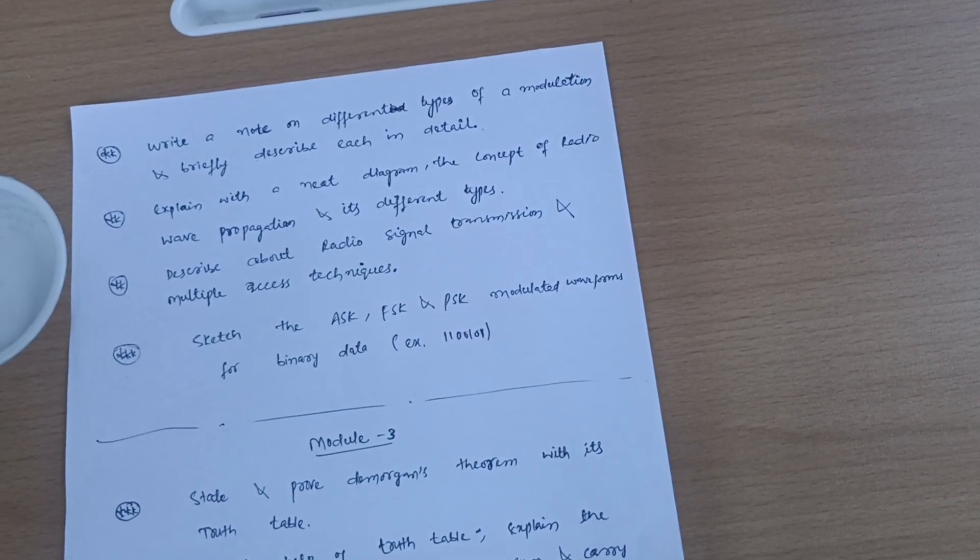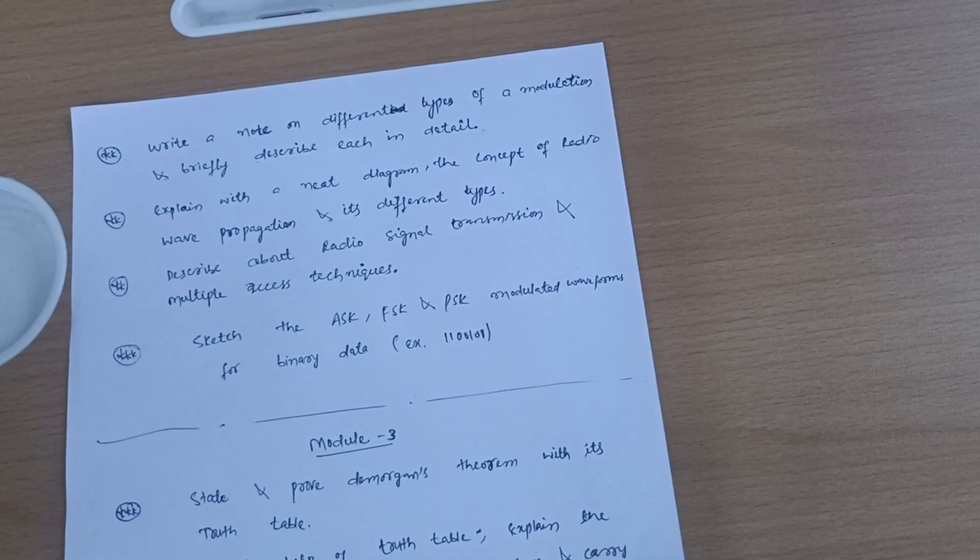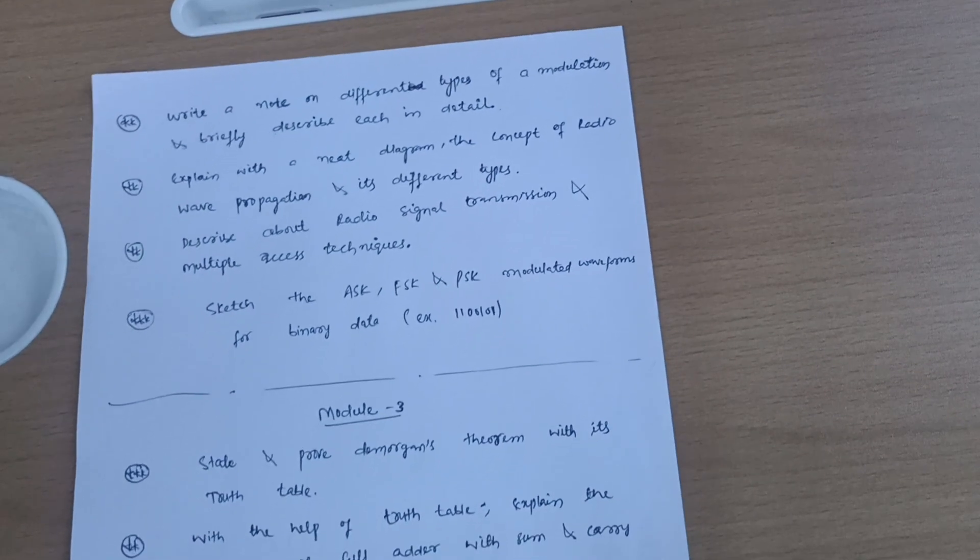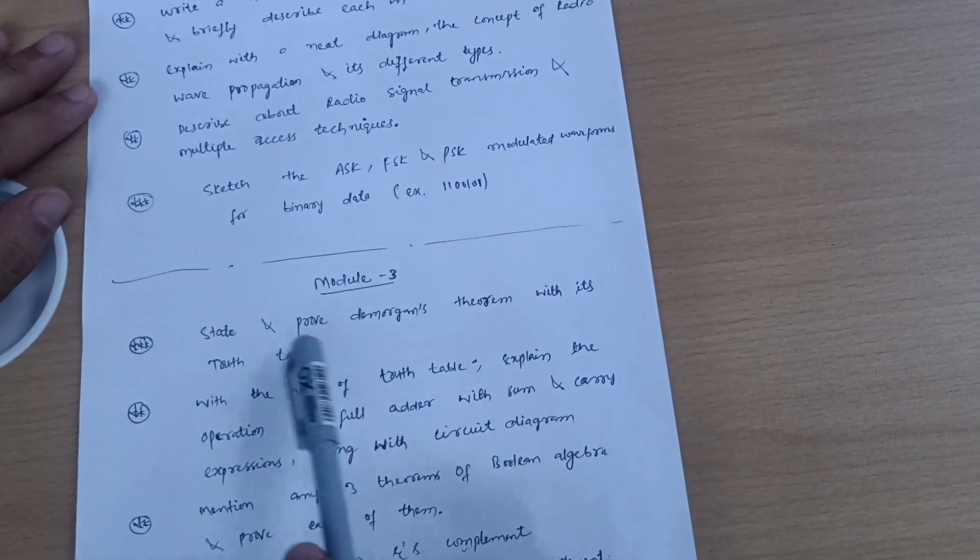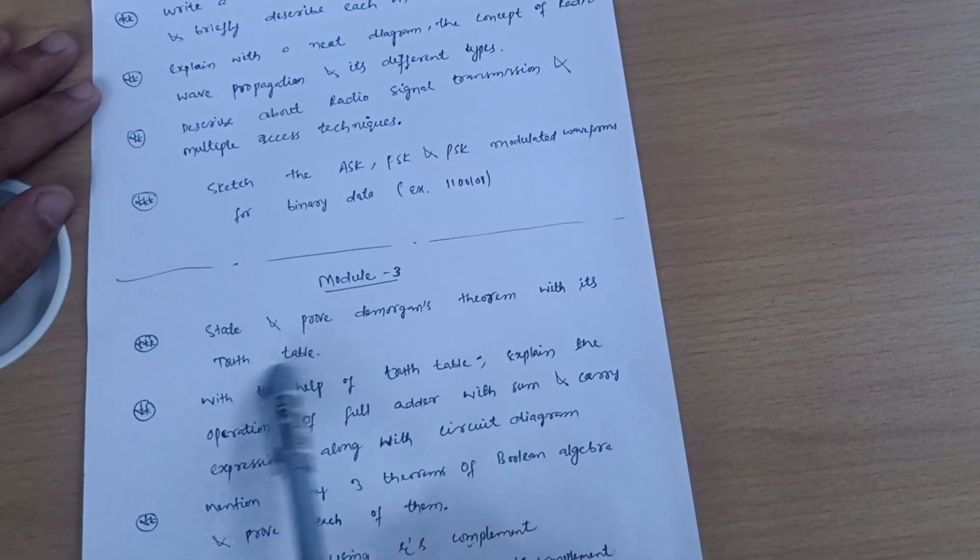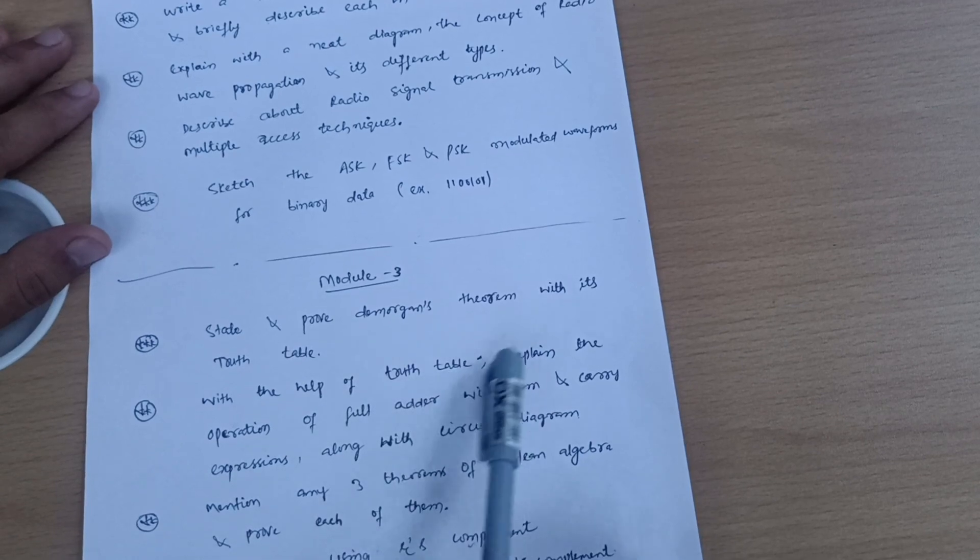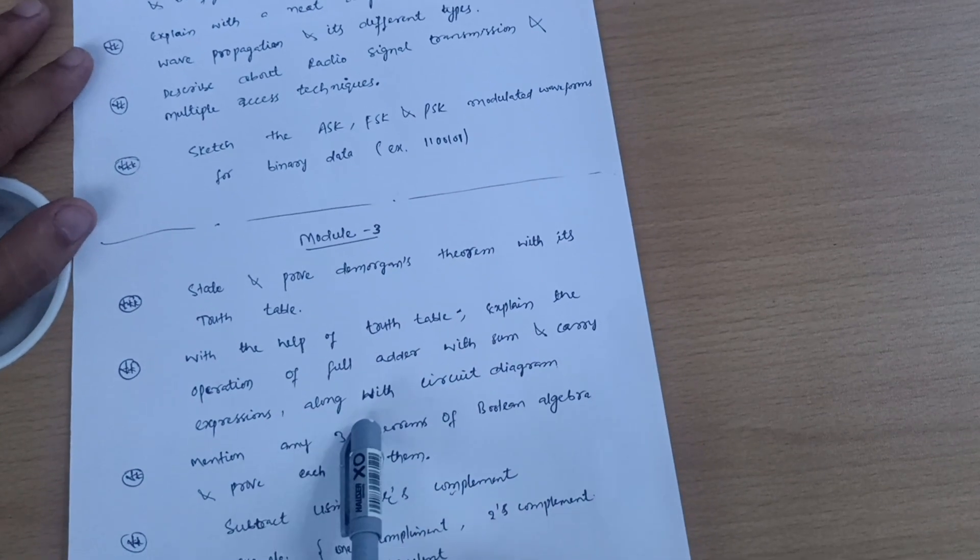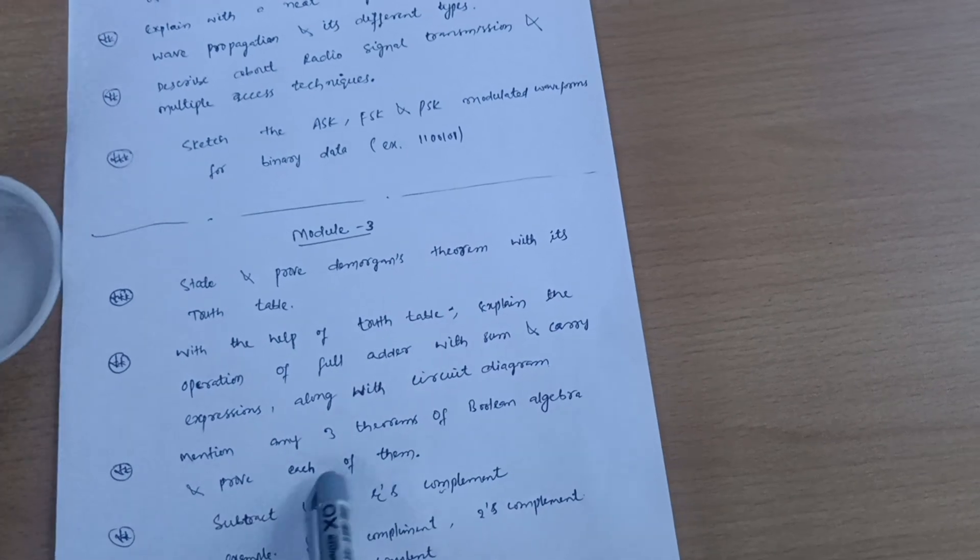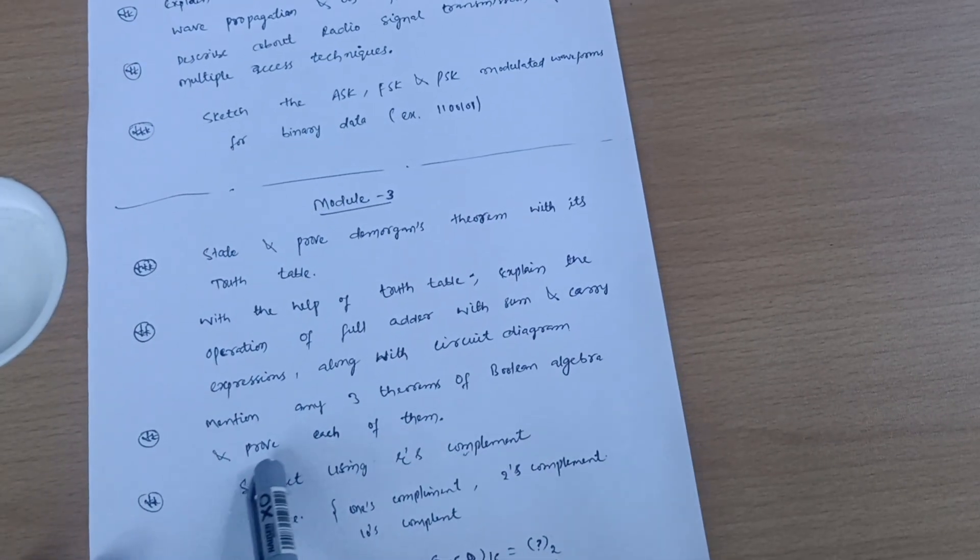Let me discuss the most important ones from Module 3 so you can score in this subject. State and prove De Morgan's theorem with truth table. With the help of truth table, explain the operation of full adder with sum and carry expressions along with circuit diagram. Mention any three theorems of Boolean algebra and prove each of them.